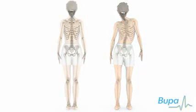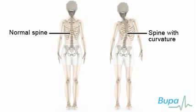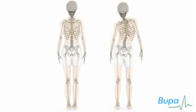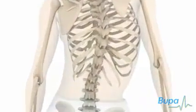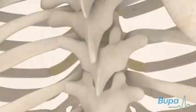Many people have a slight sideways curvature of their spine, and in most cases this is considered normal. Scoliosis is defined as a curve of more than 10 degrees. The curvature is often shaped like the letter S or C, and the spine may also be twisted. In scoliosis, the vertebrae twist and curve.